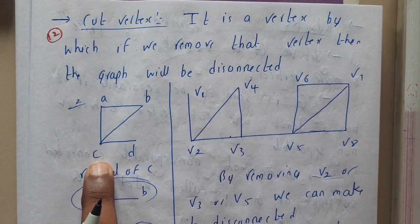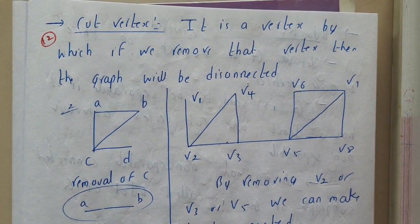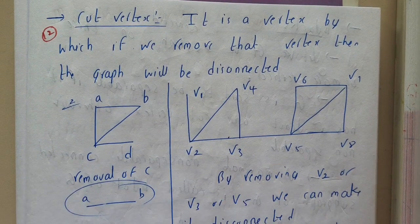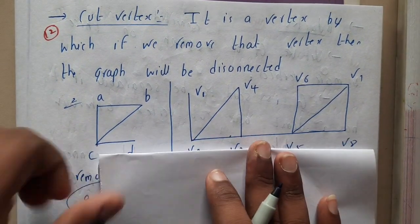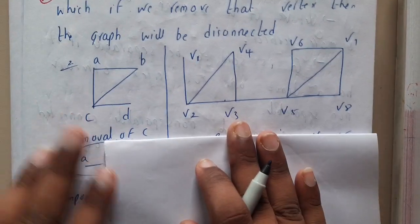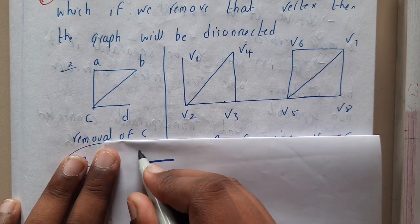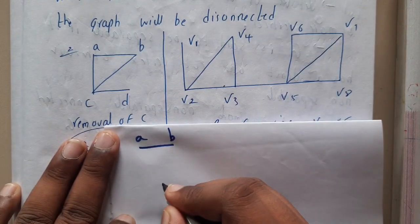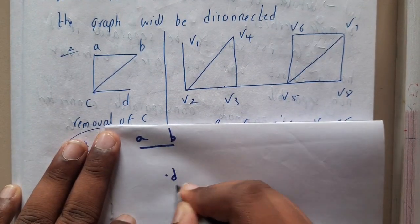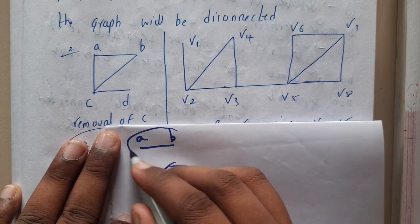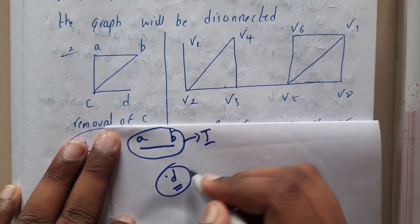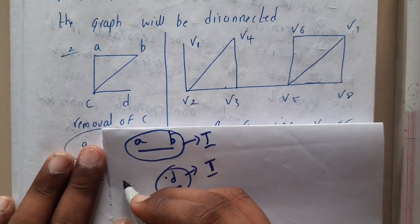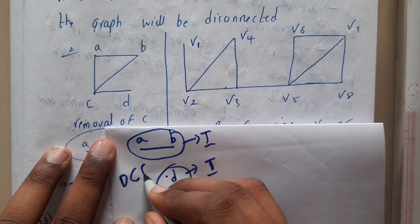So on removal of c, what will happen for this? You will be ending up with a-b and a particular dot for d. So here this is a graph and this is a graph. This is your first component and this is your second component. So it becomes a disconnected graph with two components, right?